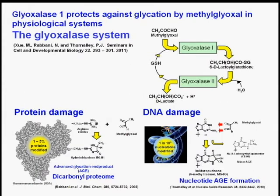Glyoxalase 1 protects against glycation by methylglyoxal in physiological systems. It is part of the cytosolic glyoxalase system that metabolizes methylglyoxal to D-lactate. Metabolism of methylglyoxal is very important in physiological systems because otherwise methylglyoxal modifies proteins and DNA, producing significant levels of damage.